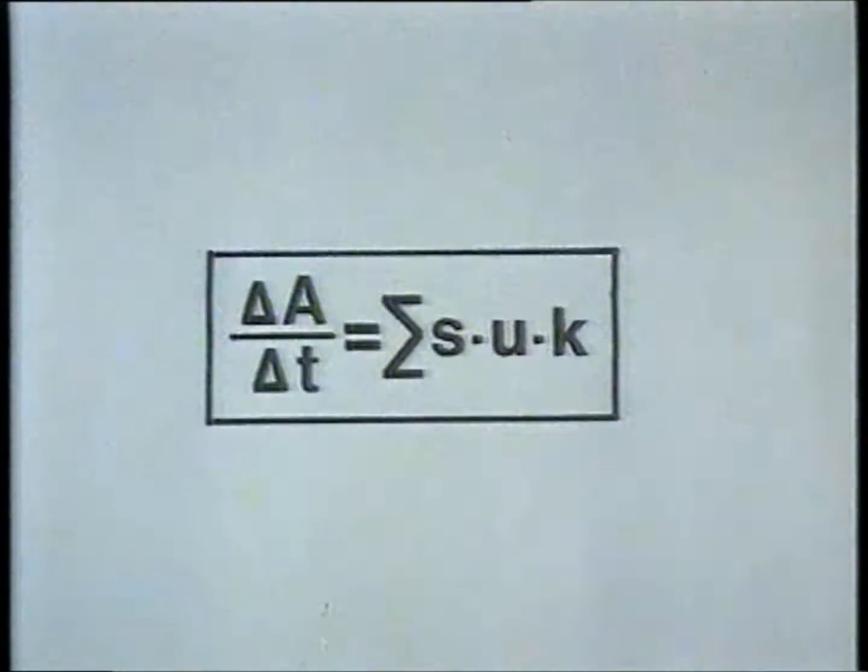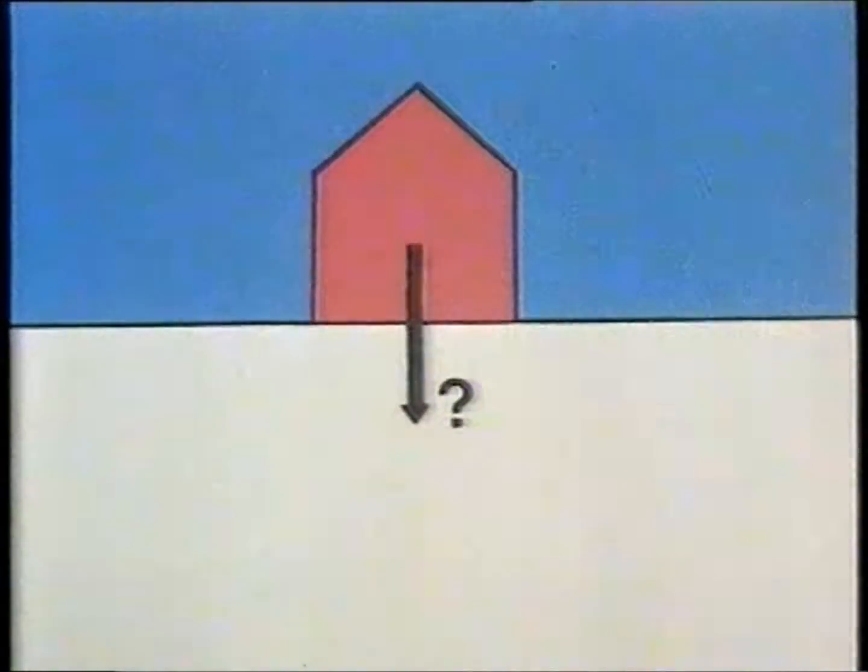We shall demonstrate the application of the upper bound method with a simple example. Here is a house. Under certain circumstances the house may start to sink due to the deformation of the ground. We will calculate an upper limit to the pressure p necessary to make the house sink.